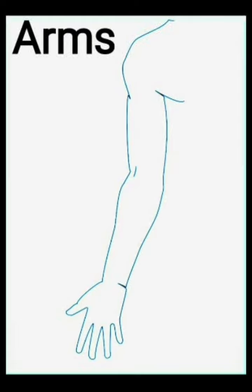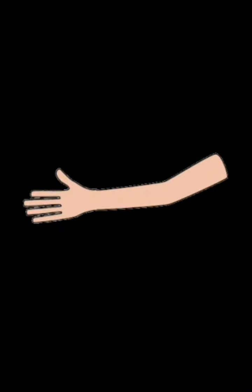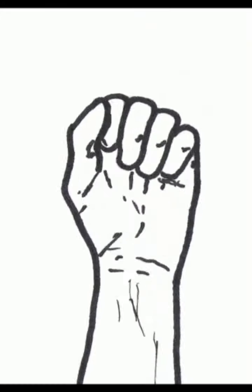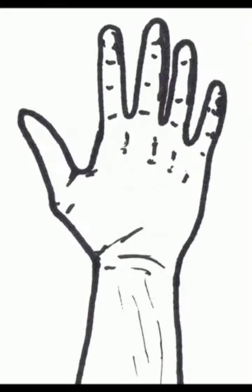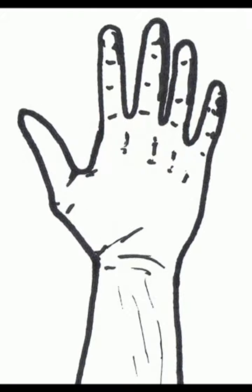Arms. Children, we can bend our arm at the shoulder and at the elbow. The fingers of our hand can bend too — that is why we can make a fist. We can do many things with our hands.